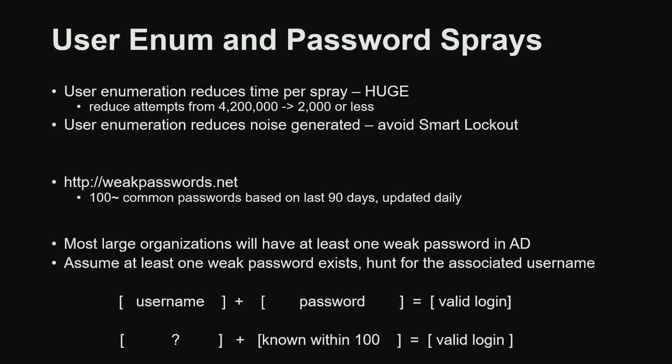And often, if you've ever dumped a domain controller, there's always one or two bad passwords in there. Instead of thinking about it as trying to guess the password when you're doing password sprays, assume there's going to be one out of the top hundred passwords in there. Focus on finding the users — if you can get complete enumeration, you can almost always find a weak password. Think of it as trying to find the user with that weak password that we assume exists somewhere.